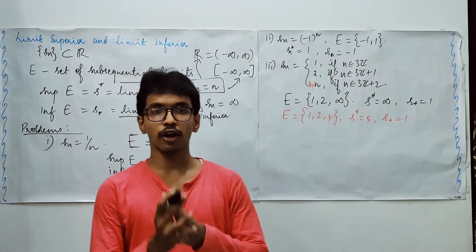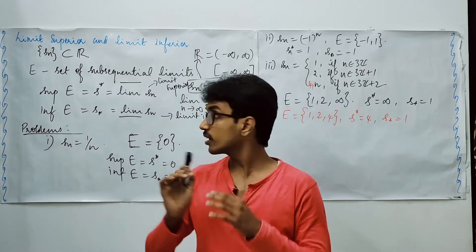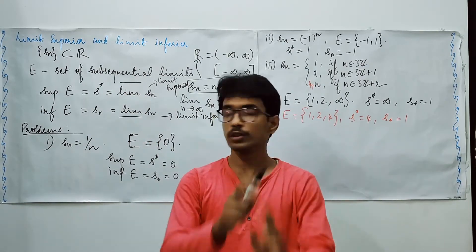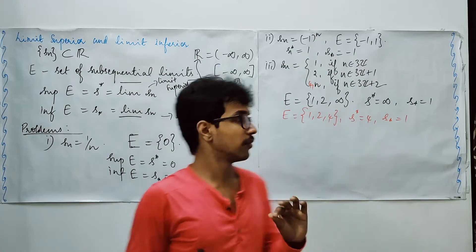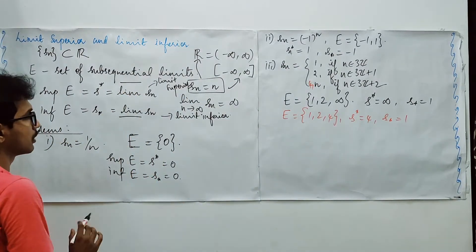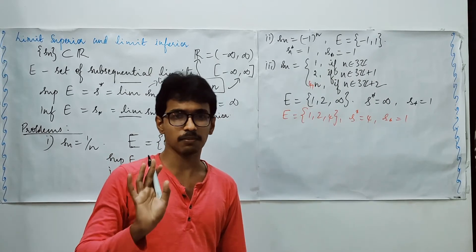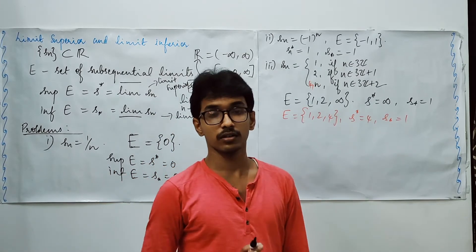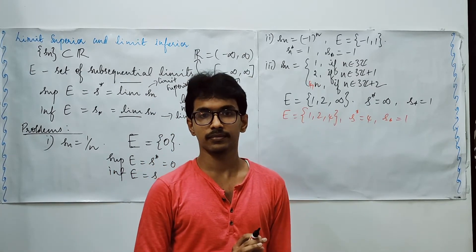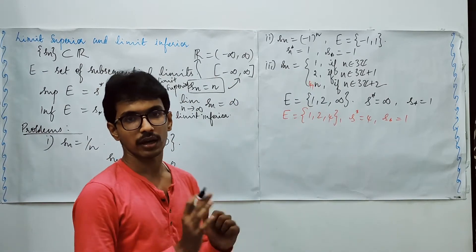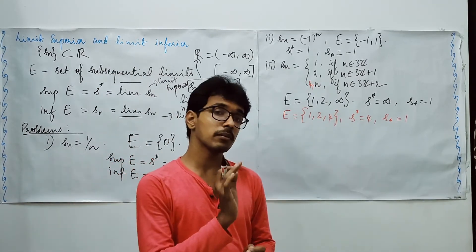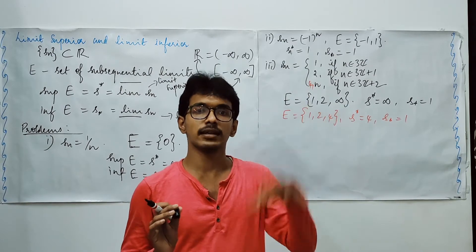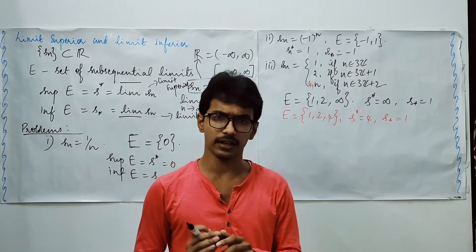If we want to discuss limit superior and limit inferior without the concept of sub-sequential limits and convergence, just take a plain sequence and try to find the limit points of those sequences. What do we mean by a limit point of a set? In the neighborhood, many points of the set have to be there. Just make use of that idea.